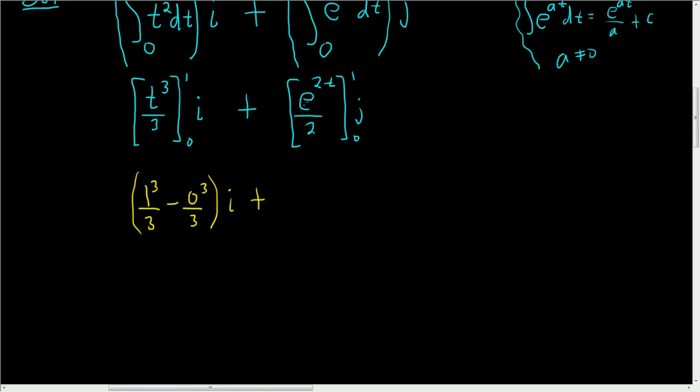Plus, here we plug in the 1 first. So we get e to the 2 times 1, so 2 over 2, minus e to the 0 over 2, and then we still have the j.